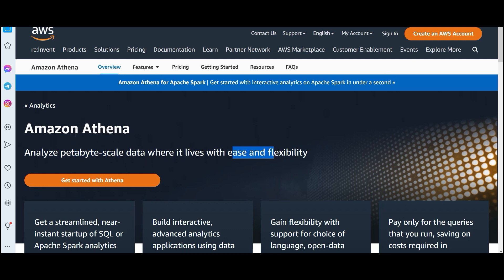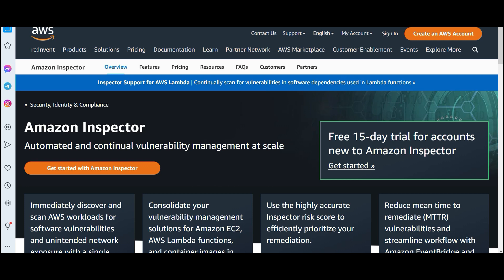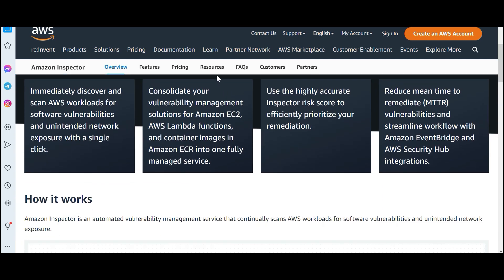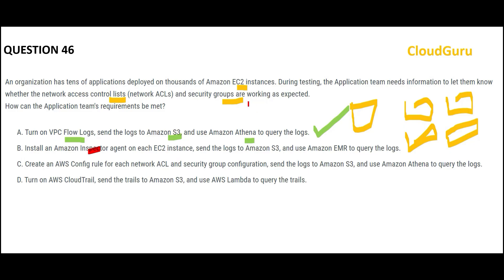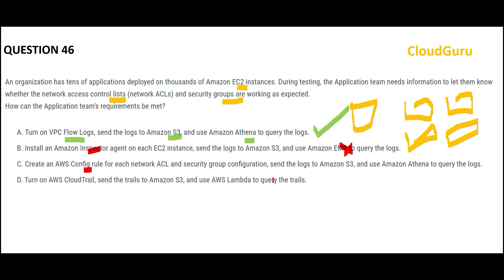Option B talks about Inspector — Inspector is like a cop for vulnerability management, used to catch threats and check for unintended network exposure. But the question is simply asking whether ACLs and security groups work correctly, not about vulnerability scanning, so this is wrong. Config rule is for anything related to configuration changes — it can assess, audit, and evaluate resource configurations — but it will not help you monitor flow logs or network IP traffic, so this is also wrong.